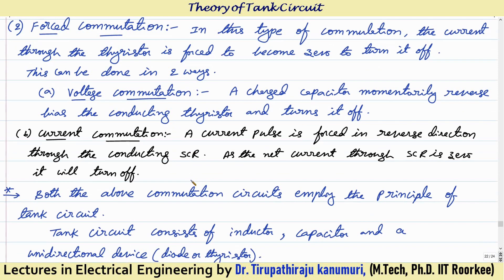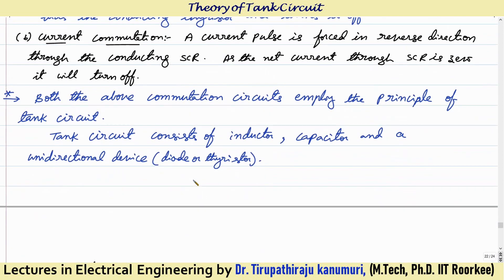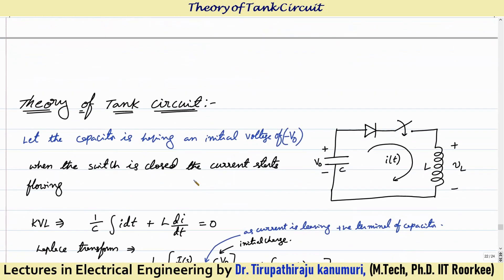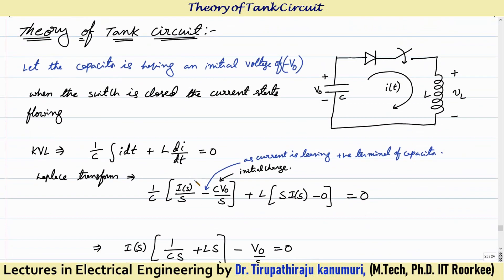Both the above commutation circuits employ the principle of the tank circuit. The tank circuit basically contains an inductor, a capacitor, and a unidirectional device — the device can be either a diode or a thyristor. So let us see what the tank circuit is. The tank circuit basically contains a capacitor, an inductor, and one unidirectional device, which can be either a diode or another thyristor.